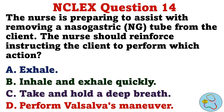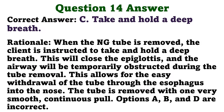The nurse is preparing to assist with removing a nasogastric tube from the client. The nurse should reinforce instructing the client to perform which action? A. Exhale. B. Inhale and exhale quickly. C. Take and hold a deep breath. D. Perform Valsalva's maneuver. The correct answer is C: take and hold a deep breath. When the NG tube is removed, the client is instructed to take and hold a deep breath. This will close the epiglottis and the airway will be temporarily obstructed during the tube removal, allowing for easy withdrawal of the tube through the esophagus into the nose. The tube is removed with one very smooth, continuous pull. Options A, B, and D are incorrect.